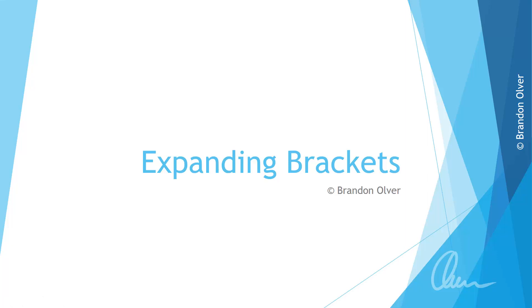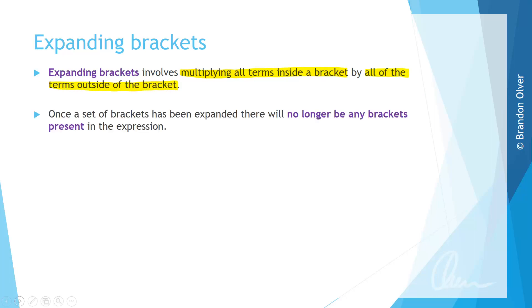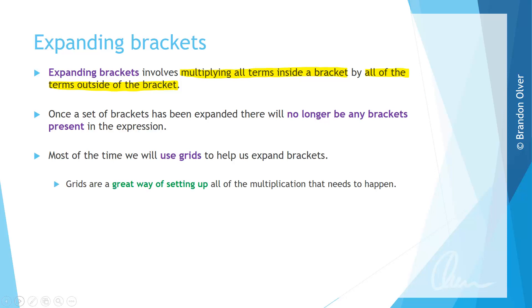In this video we're going to look at expanding brackets. Expanding brackets involves multiplying all terms inside a bracket by all of the terms outside of that bracket. Once a set of brackets have been expanded there will no longer be any brackets present in the expression, although they will still be equivalent. Most of the time we will use grids to help us expand brackets, because they are a great way of setting up all of the multiplication needed and minimizing mistakes.